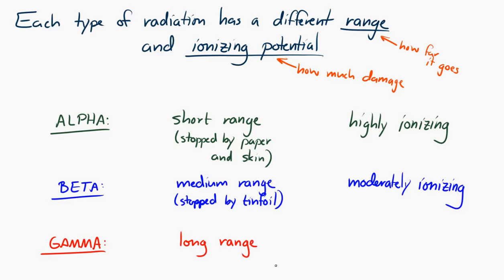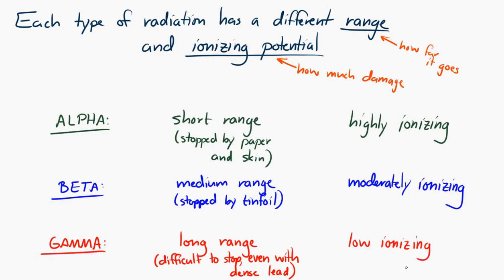Gamma rays have a very long range. They're rarely stopped completely by anything — you can attenuate or reduce the number of gamma particles by providing a huge amount of lead, but it's difficult to completely stop gamma rays. They have a low ionization potential and are unlikely to interact with matter. However, one of the dangerous things about gamma radiation is that when it does interact with matter, even though that's unlikely, it can cause lots of harm. Remember, a gamma ray is a photon with a huge amount of energy in nuclear terms, and that large energy can cause significant damage.